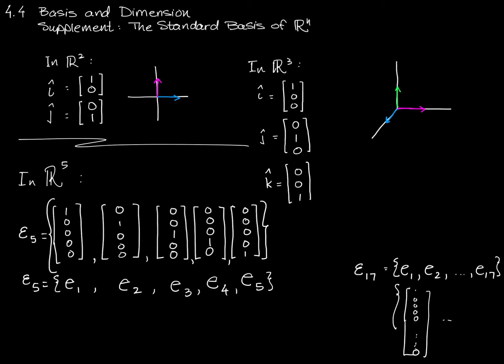So this notation, e sub n, let me write it more generally up here. e sub n is simply the collection of vectors, e sub 1 through e sub n, where e sub i is the vector with zeros everywhere except for the ith entry. So there's a 1 in the ith entry and zeros everywhere else.